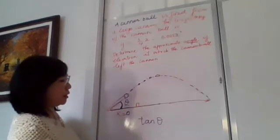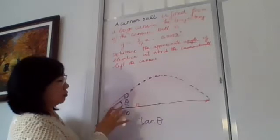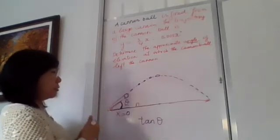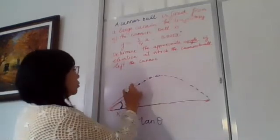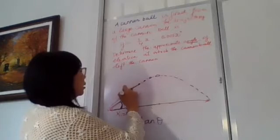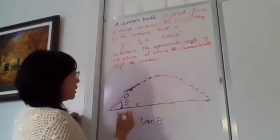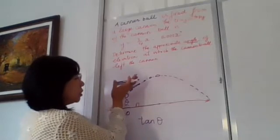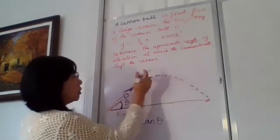We measure the slope of the tangent line, right? The slope of the tangent line to the trajectory, right, beside the angle theta.